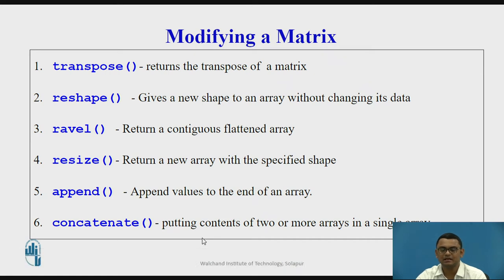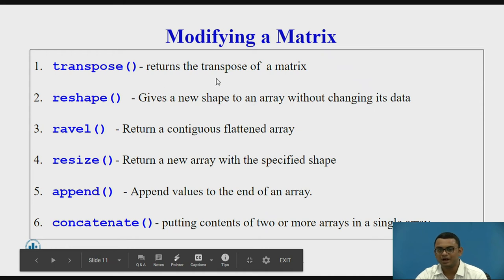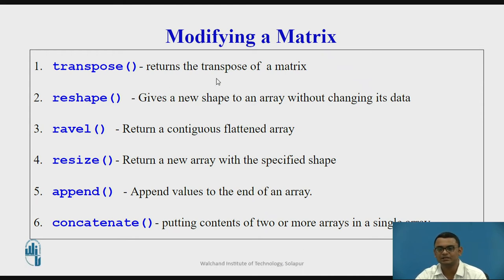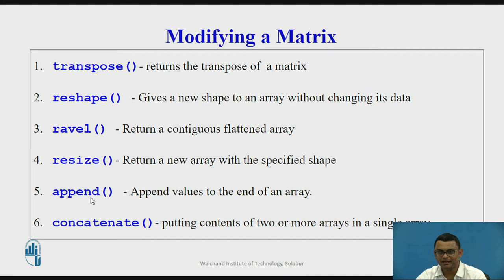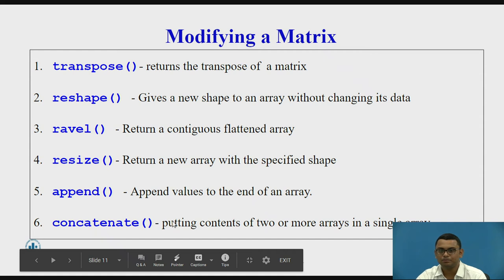Now let us see some functions that help us modify a matrix. Transpose swaps the elements in rows to columns and vice versa. Reshape gives a new shape to an array without changing its data. Ravel returns a contiguous flattened array. Resize returns a new array with a specified shape. Append adds values to the end of the array, and concatenate joins the contents of two or more arrays into a single array.